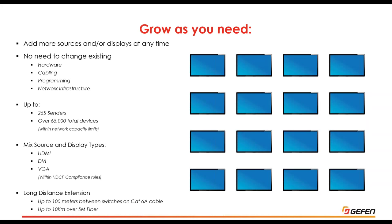As the matrix grows, you don't need to change what's already there — the same sender works for a four by four or a 52 by 84. You don't need to change existing cabling or existing programming. The Geffen matrix supports up to 255 senders (increasing in the near future) and over 65,000 total devices within network capacity limits. You can also mix source and display types — HDMI, DVI, VGA — bearing in mind that HDCP rules apply.